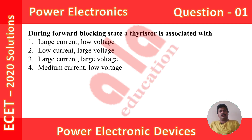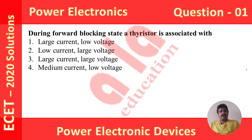On the screen, you are seeing question number 1. The question is: during forward blocking state, a thyristor is associated with. As we know, a thyristor will operate in 3 states: the first one is forward blocking state, the second one is forward conduction state, and the third one is reverse blocking state.